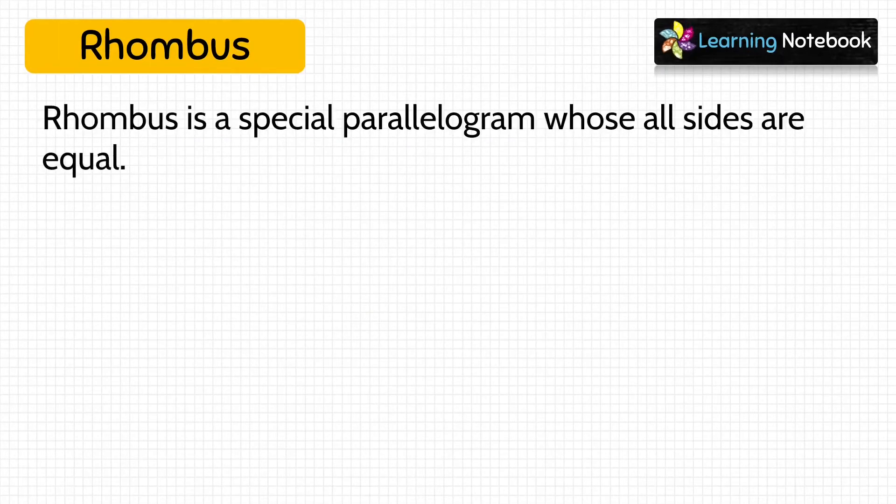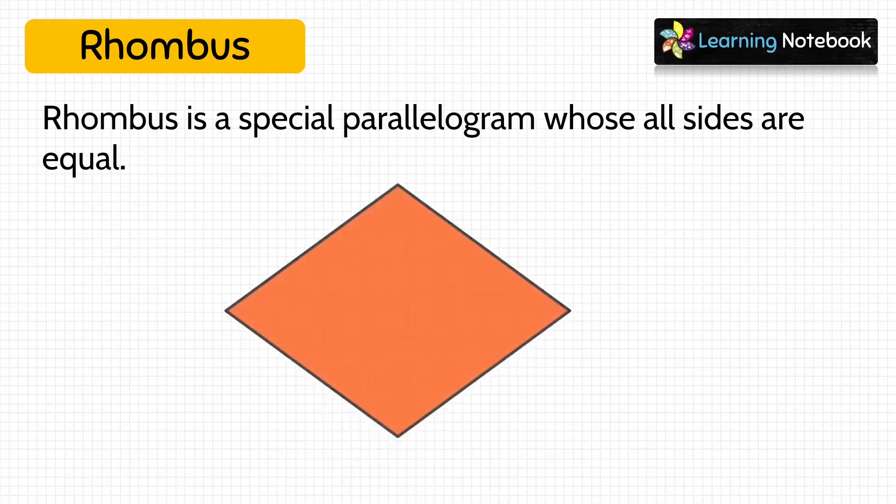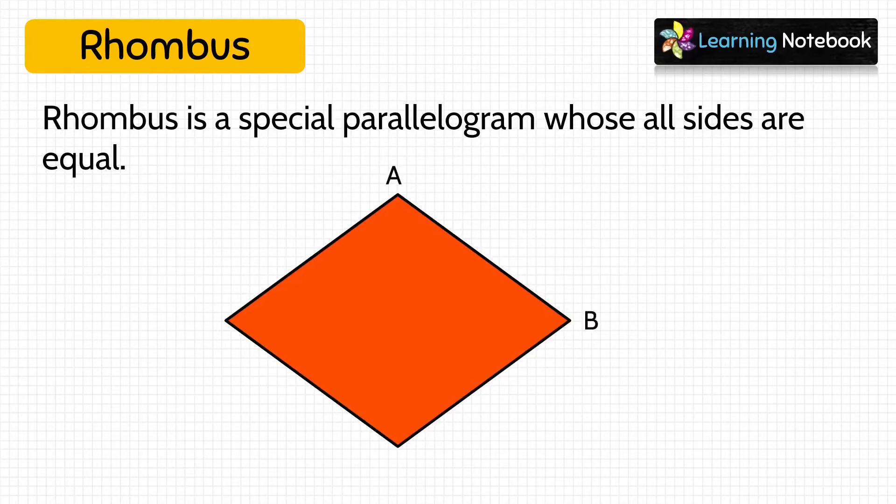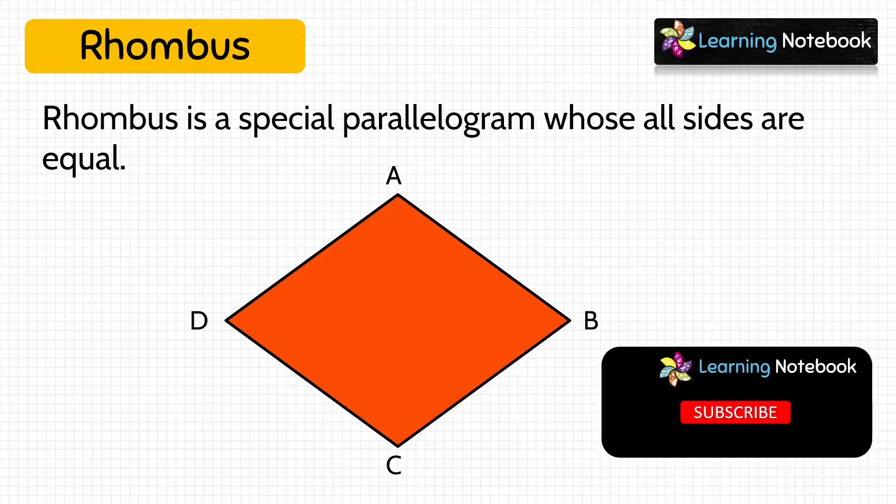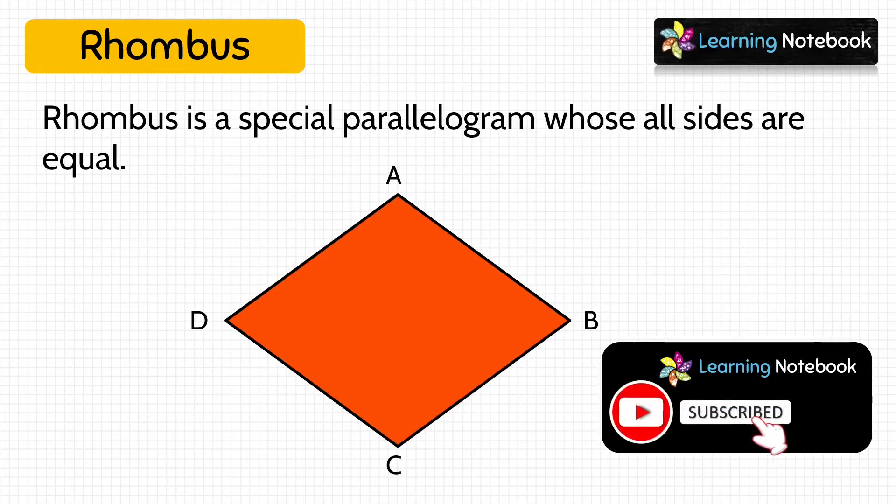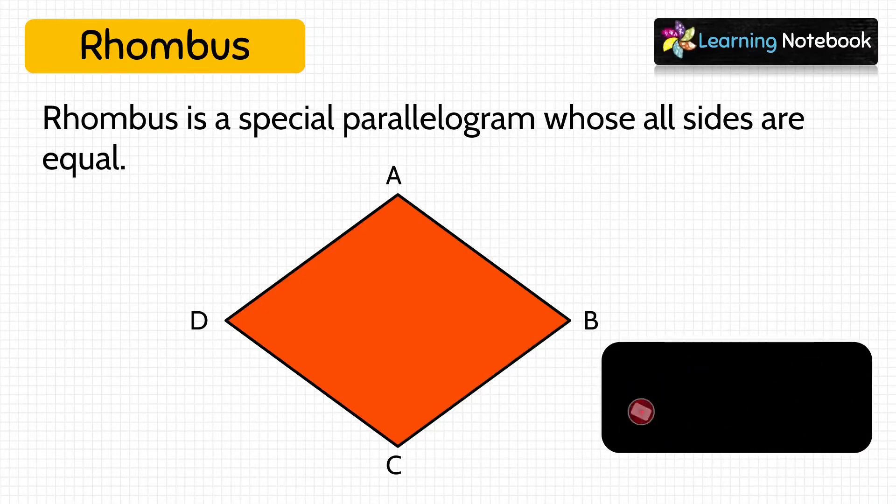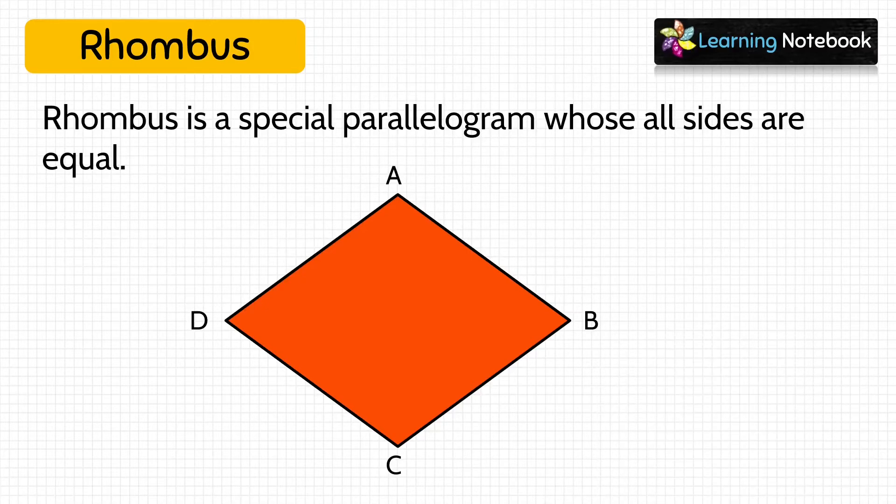First let's understand what is rhombus. Rhombus is a special parallelogram whose all sides are equal. Like here ABCD is a rhombus. It is also a special parallelogram because all the properties of parallelogram apply to rhombus. Students, it also means that all rhombus are parallelograms, but all parallelograms are not rhombus.